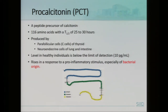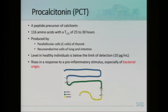Procalcitonin is a peptide precursor of calcitonin, comprised of 116 amino acids with a half-life of 25 to 30 hours. This molecule is produced mainly by the parafollicular cells or C cells of the thyroid, which are neuroendocrine cells, and also the neuroendocrine cells of the lung and intestine. The level in healthy individuals is below the limit of detection — below 10 picograms per milliliter. However, with stimulation by, for example, bacterial toxin, procalcitonin can rise in response to pro-inflammatory stimuli.